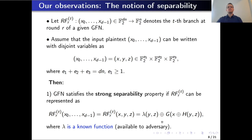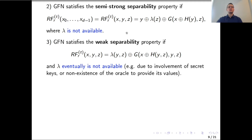It is important to observe the placement of blocks y, z, and x. We have the notion of semi-strong separability, which occurs if the observed branch has a form where block y is present outside of lambda, and block z is also present outside of lambda. Additionally, g depends on two terms: x plus h(y) and also z. Here we assume that lambda is not available.